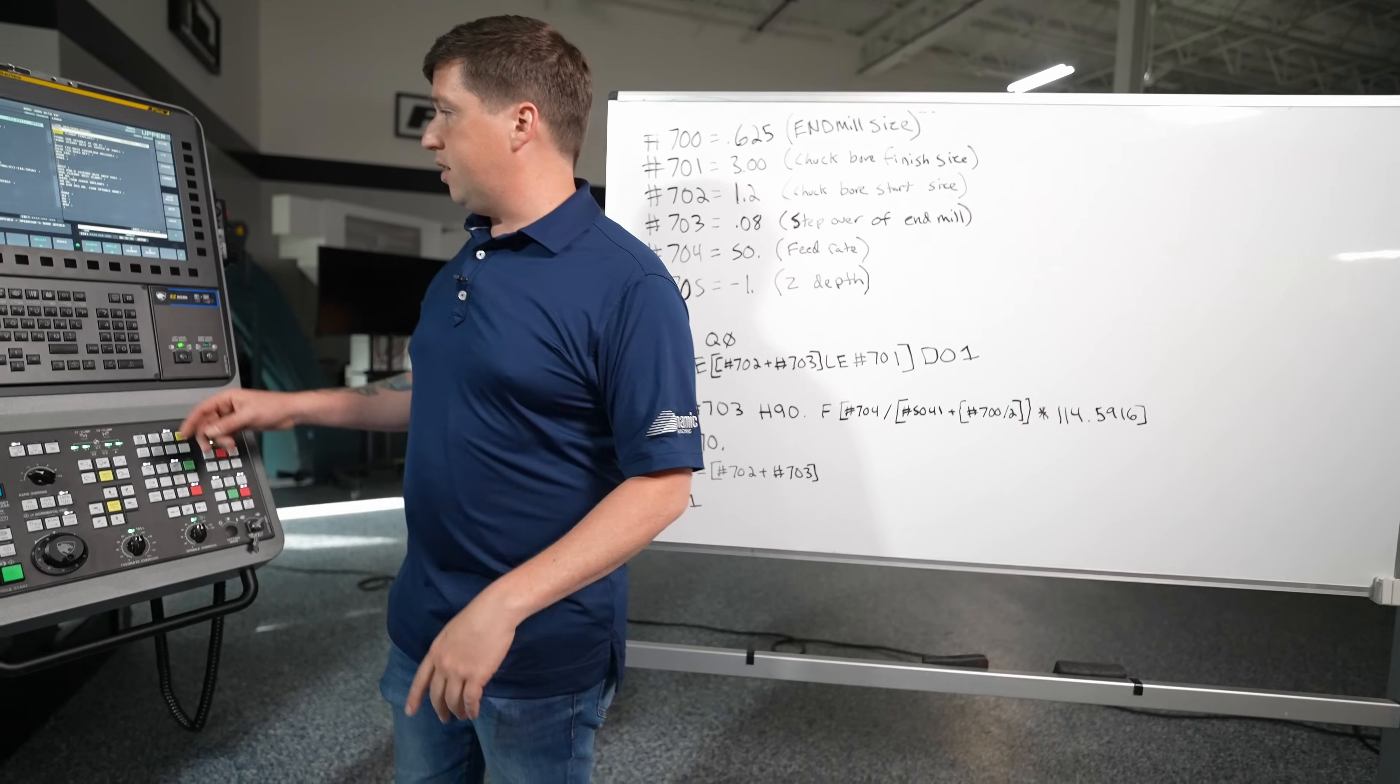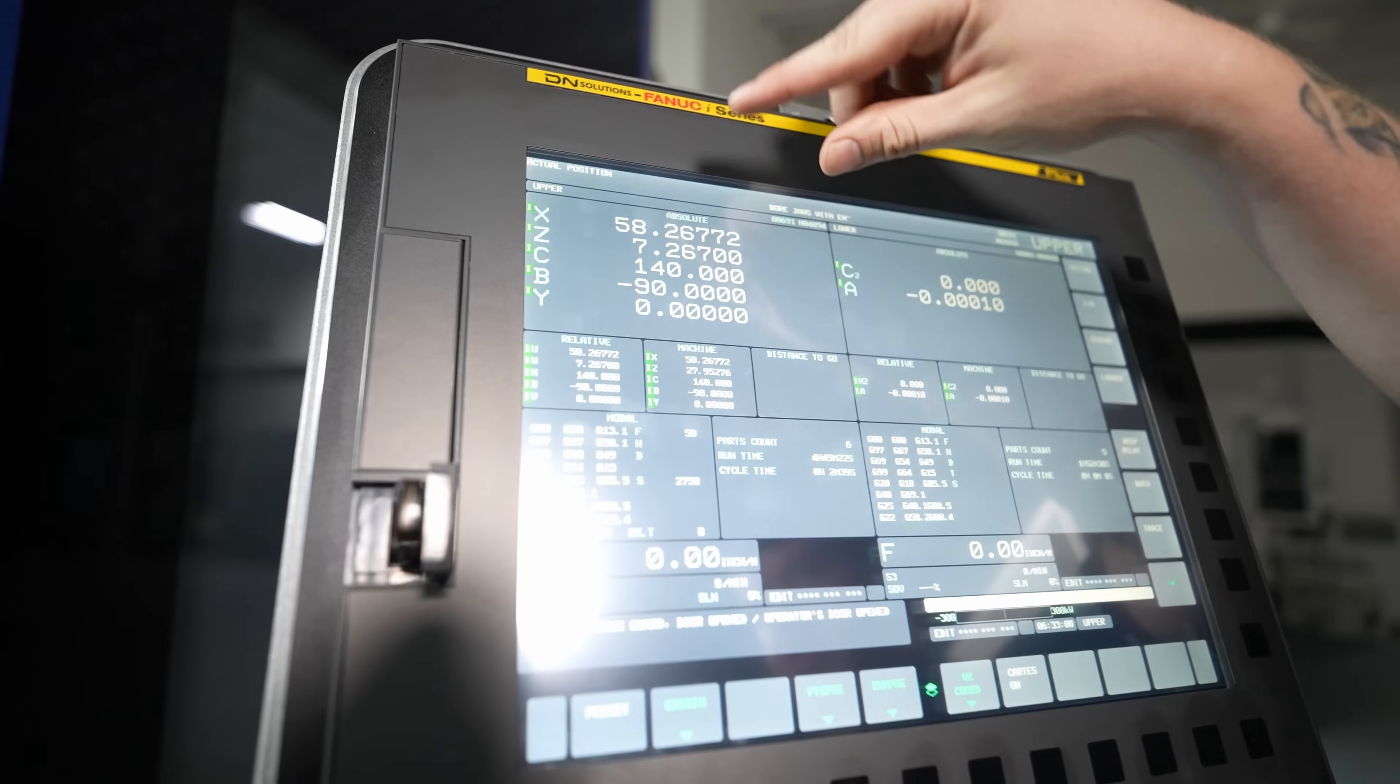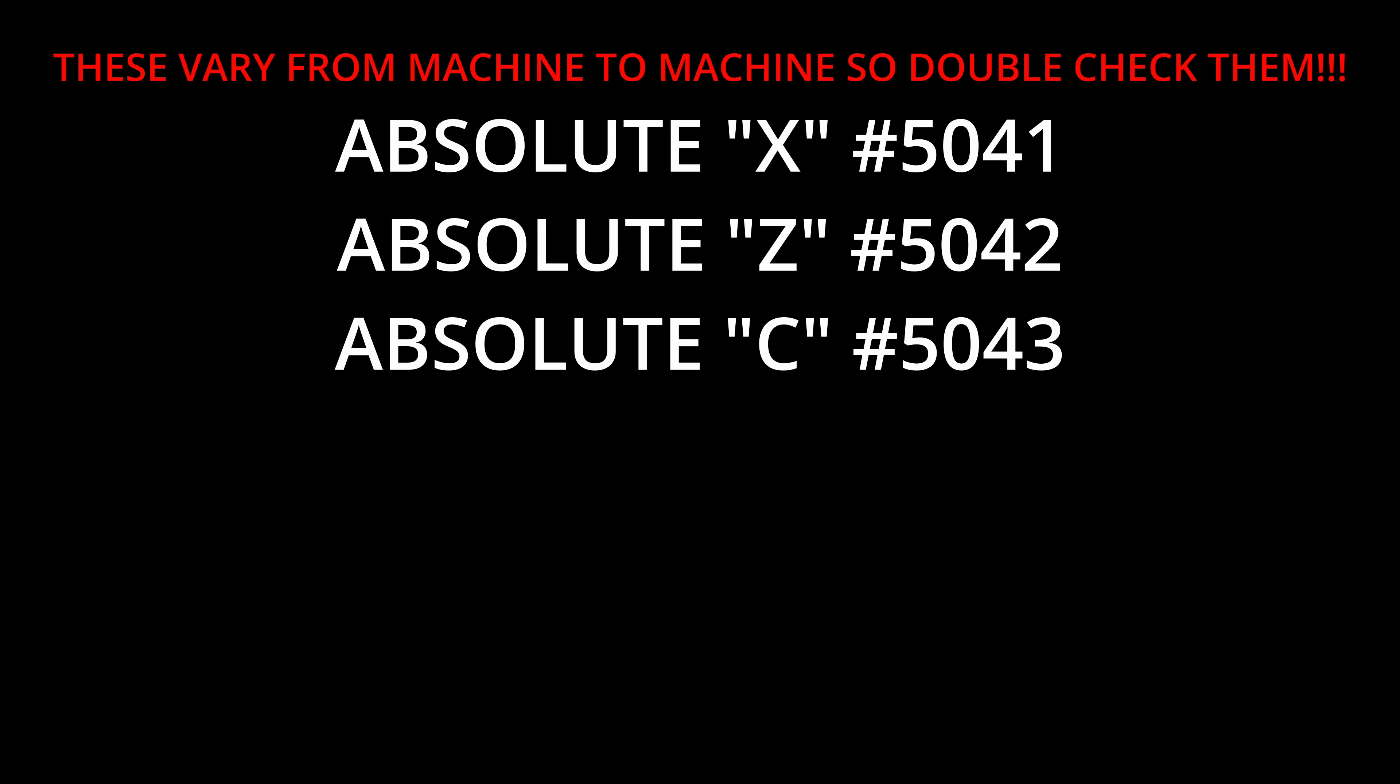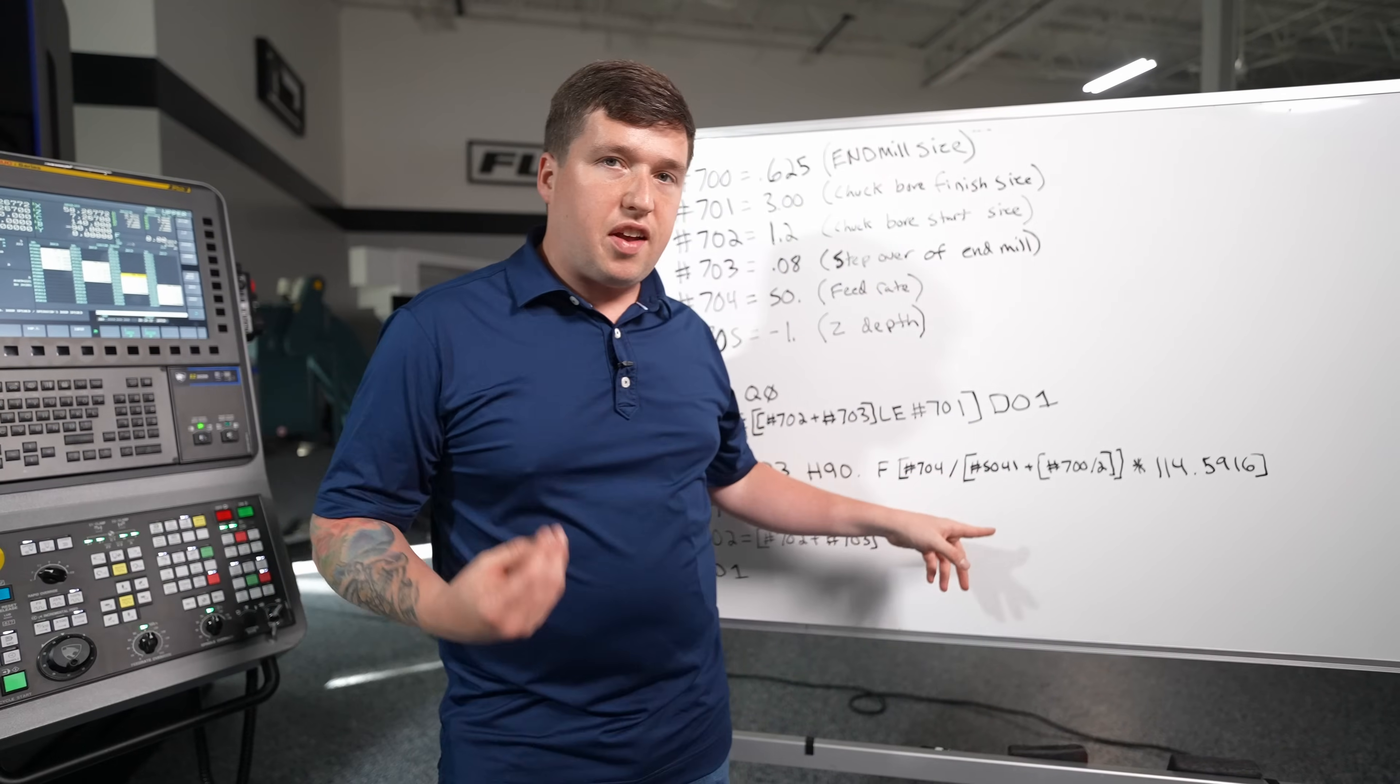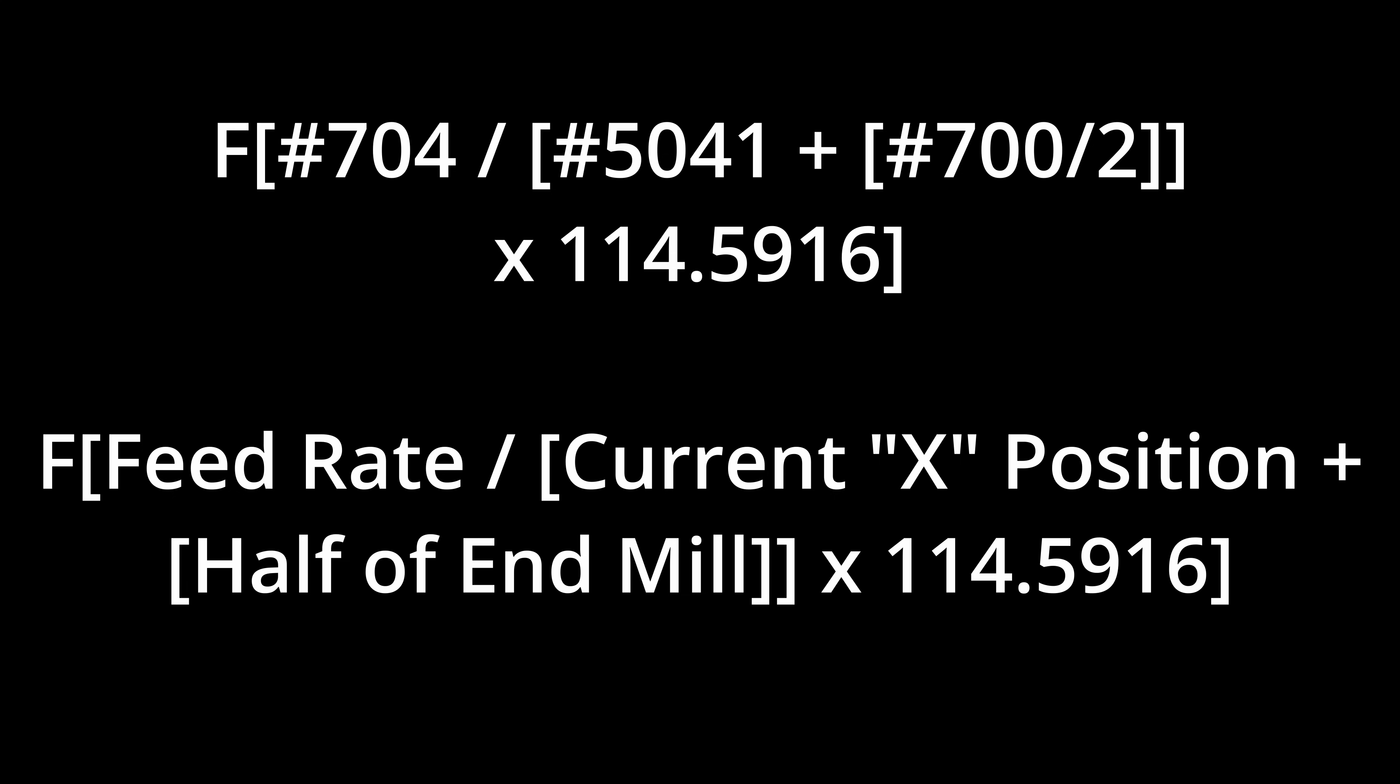Well come over here real quick. If I hit position you'll see we have x z c b y. Now the way it works on every single control is your first axis is pound 5041 your second is pound 5042 your third is pound 5043 pound 5044 and pound 5045. Back to our dry erase board here I'm going to change my feed rate per whatever diameter x is because that's what I'm looking at every time it reads this line.